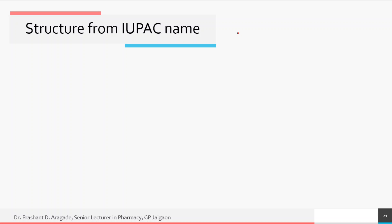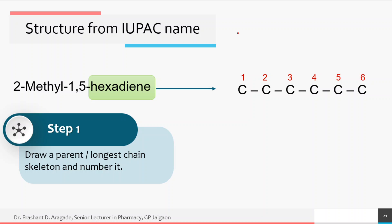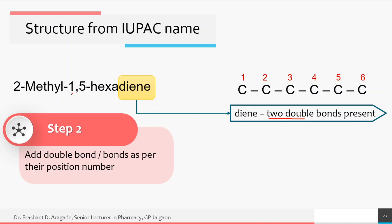Now let's see how to draw a structural formula from an IUPAC name, using the example 2-methyl-1,5-hexadiene. Step one: draw the parent longest continuous carbon chain. 'Hexadiene' means six carbon atoms, so draw six carbons in a chain and number them from one end. Step two: add double bonds at their position numbers. 'Di' means two double bonds — one starting at carbon one and the second starting at carbon five.